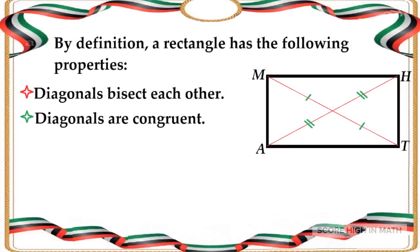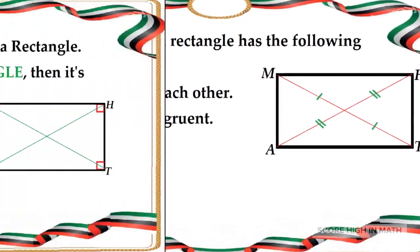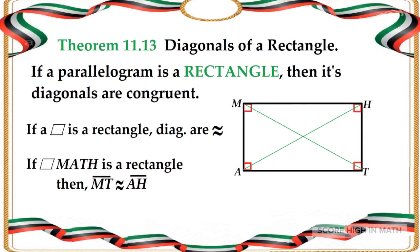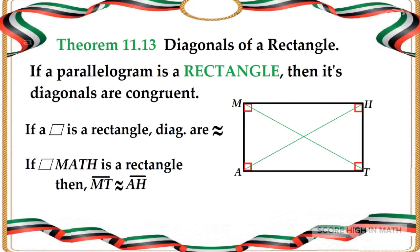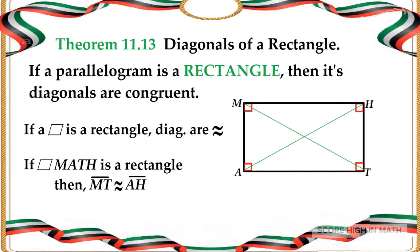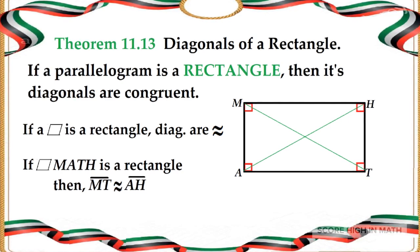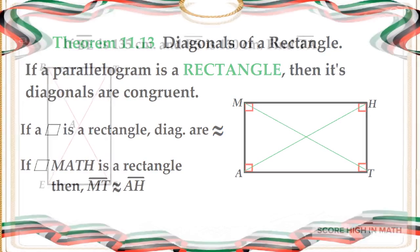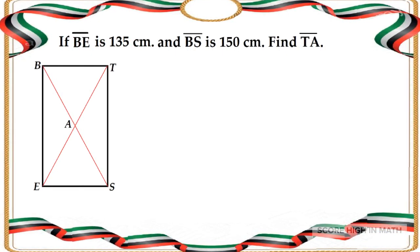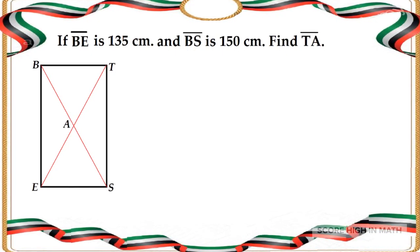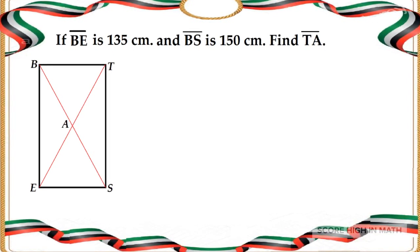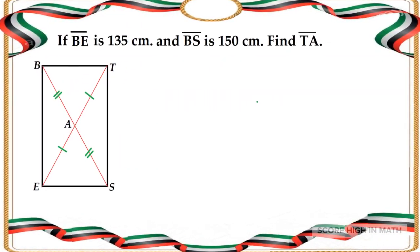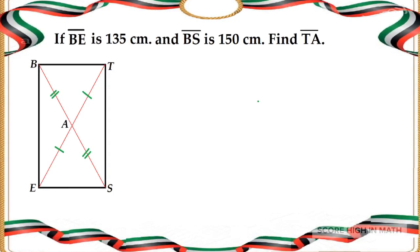Diagonals of a rectangle always bisect each other and the diagonals are also congruent. In Theorem 11.13, if a parallelogram is a rectangle then its diagonals are congruent. So if MATH is a rectangle, then line segment MT is congruent to line segment AH. Let us work on this example: if line segment BE is 135 cm and line segment BS is 150 cm, find line segment TA. I marked the diagonals with a green line so that you can see which ones are congruent.